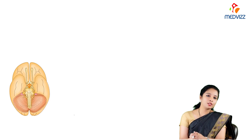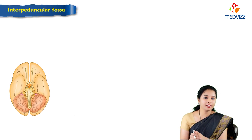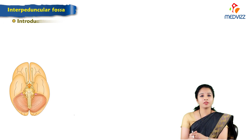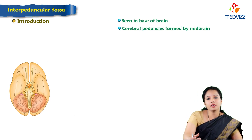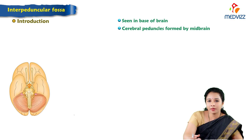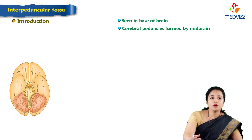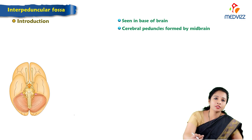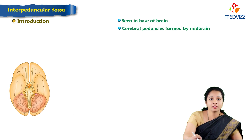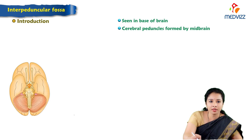Hello everyone, today we will talk about the interpeduncular fossa which is seen at the base of the brain. The cerebral peduncle is formed by the midbrain. If you have seen cut sections of the midbrain, it is dorsally divided into the tectum and ventrally we have the cerebral peduncles, which include the substantia nigra and crus cerebri.